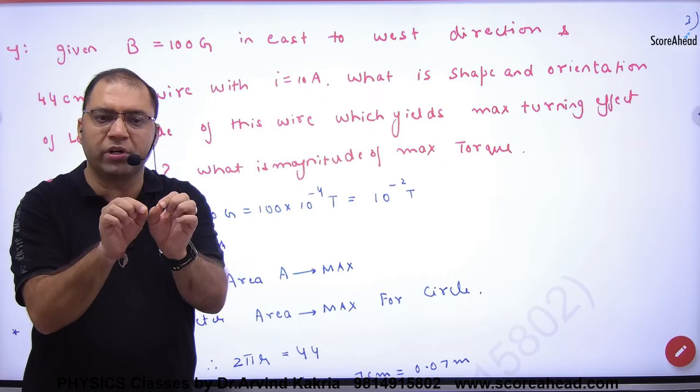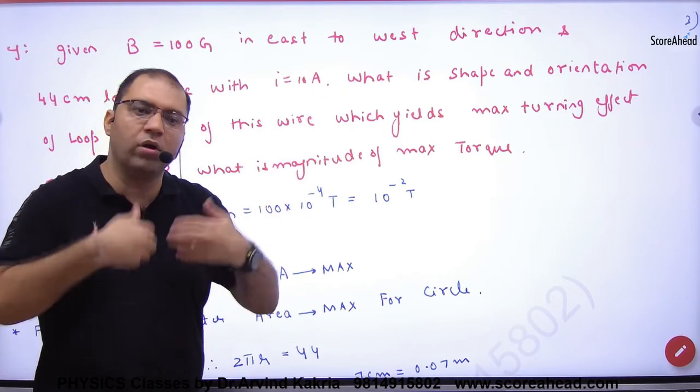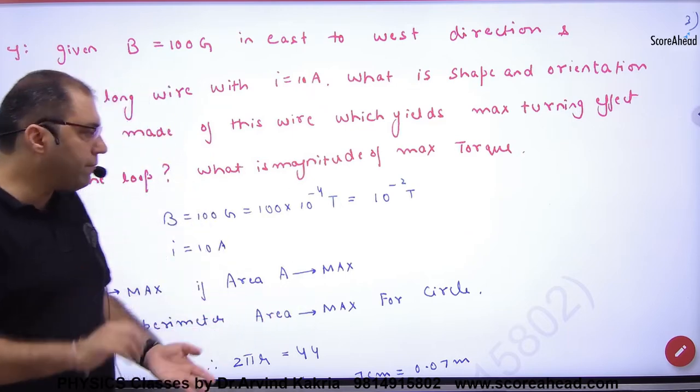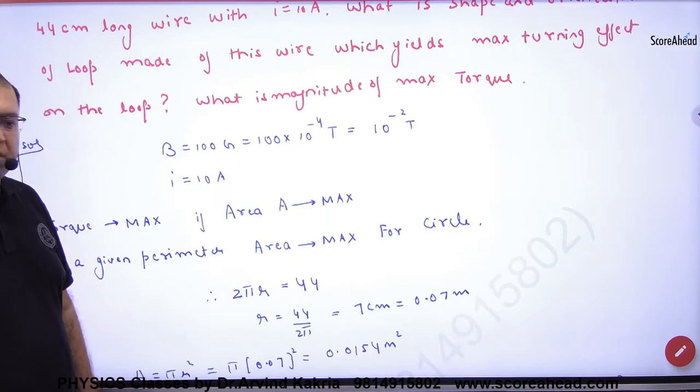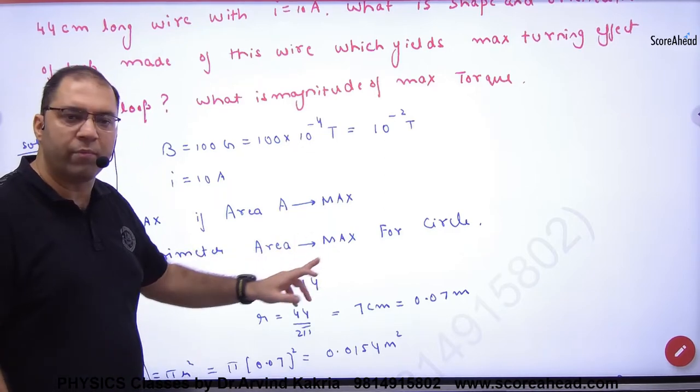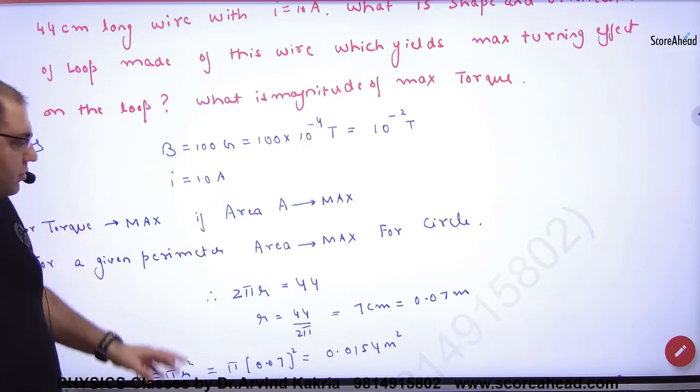I want to make that length in rectangular form, square, or circle so that the torque is maximum. Torque is maximum when the area is maximum. In all shapes, the circle is always maximum area.